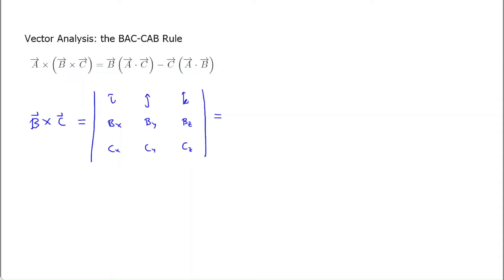Sometimes we call it a triple product since there are three factors involved. Since cross products can be a little hairy at times, especially when you have more than one, it is useful to be able to use this identity called the back-cab rule. You can probably see why it's called that from one way we have of writing that identity.